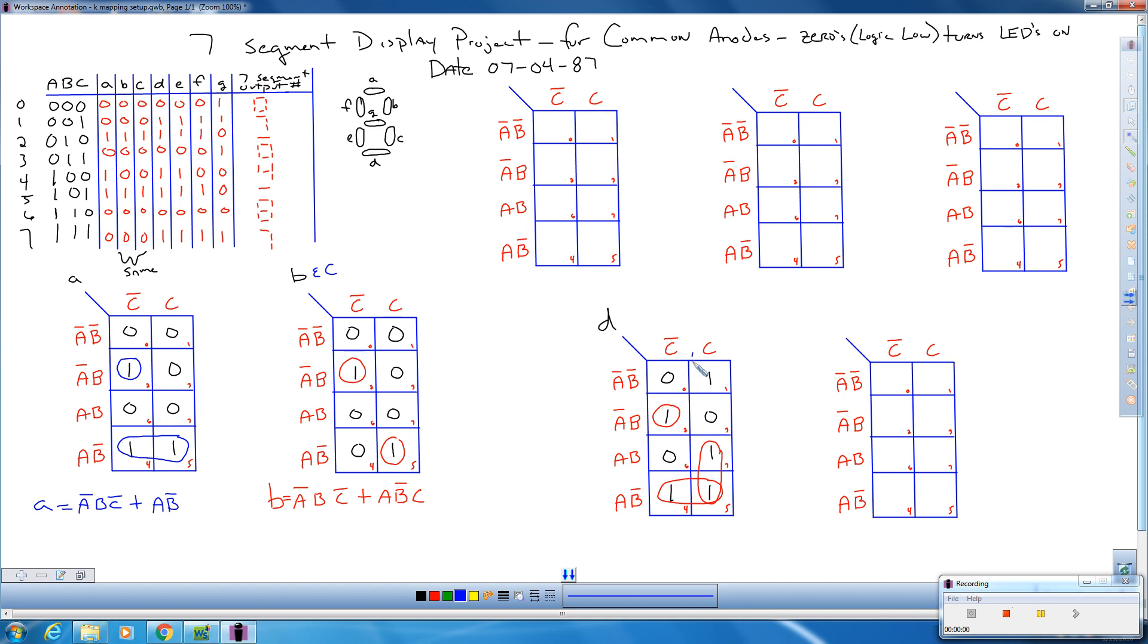And remember, I can loop this way. So I have this guy. It can pair with this one. I can use this one multiple times when I'm K-mapping. So these guys pair together as well. Alright, so let's take a look at what D is going to look like.